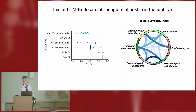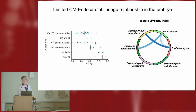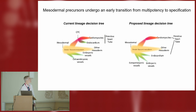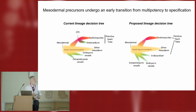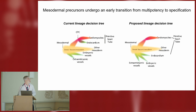We can look at this data using Jaccard similarity indexes, which intuitively show the degree of relationship between different lineages. Between endocardium and cardiomyocytes there is very little correlation, but there is much more correlation of cardiomyocytes with other extraembryonic mesoderm, and of endocardium with other embryonic endothelium. The conclusion is that the specification tree looks more like a rapid transit from a multipotent mesodermal precursor directly to cardiomyocytes or endothelial cells. Endocardial cells are more related to other endothelial cells than to cardiomyocytes — which also fits with early work by Eldad Tzahor in the chick.